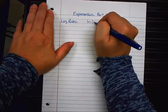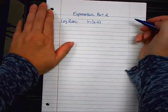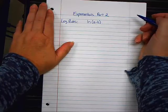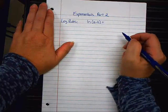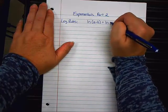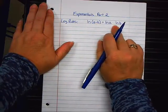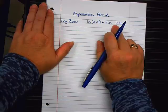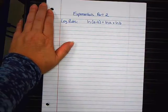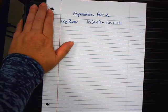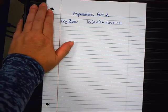First one, ln of A times B. These are things you learned in pre-Cal and Algebra 2. When you separate logs, ln of A and ln of B, if the A and B are multiplied, what sign goes between here? That becomes addition. The natural log of A times B equals the natural log of A plus the natural log of B.